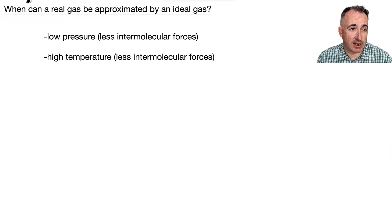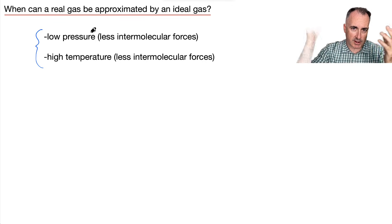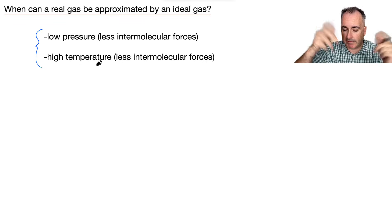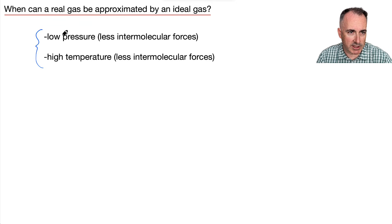Now, what are the conditions when we can actually approximate a real gas and approximate it as an ideal gas? These are the main two you need to know: at low pressure because there's going to be less intermolecular forces. If there's not much pressure, these things aren't going to be interacting with each other. Same thing with high temperature. They're moving really fast. So those are two, at least the key ones: low pressure, high temperature. There's other ones, but I think these are the main you need to know.